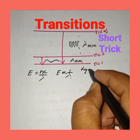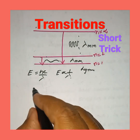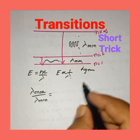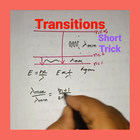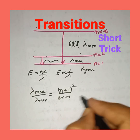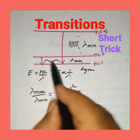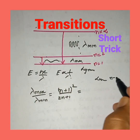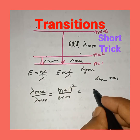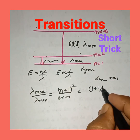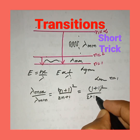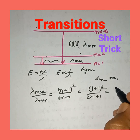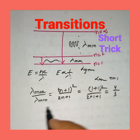For example, if it is a Lyman series, then how will you find out lambda maximum by lambda minimum using a shortcut? The formula is going to be (n+1)² divided by (2n+1). So for the case of Lyman series, n equal to 1, therefore you substitute: (1+1)² by (2×1+1), which gives you 4 by 3.